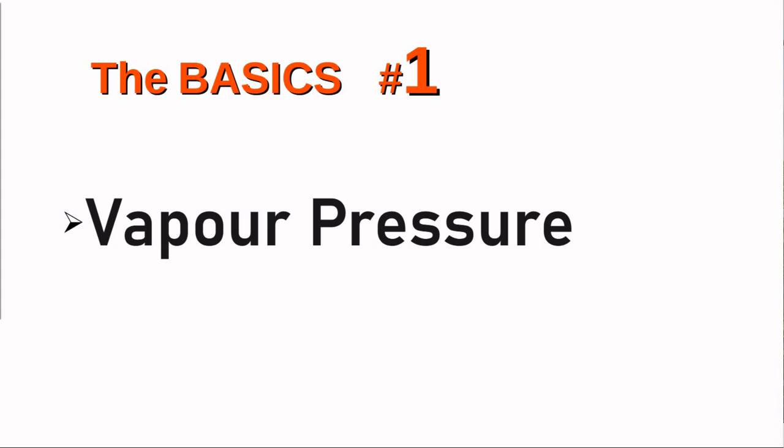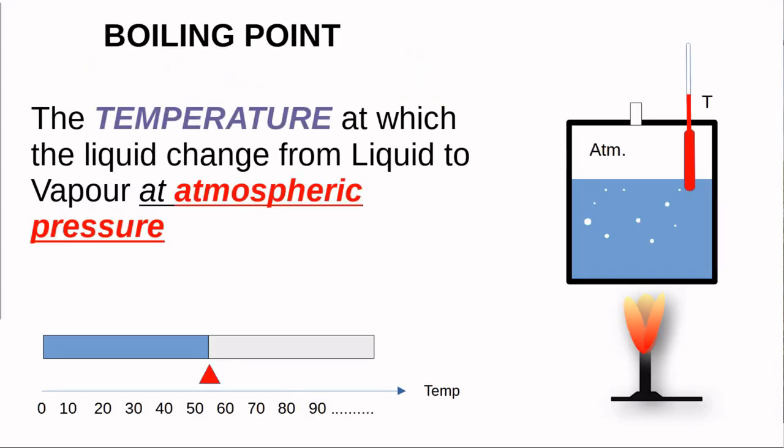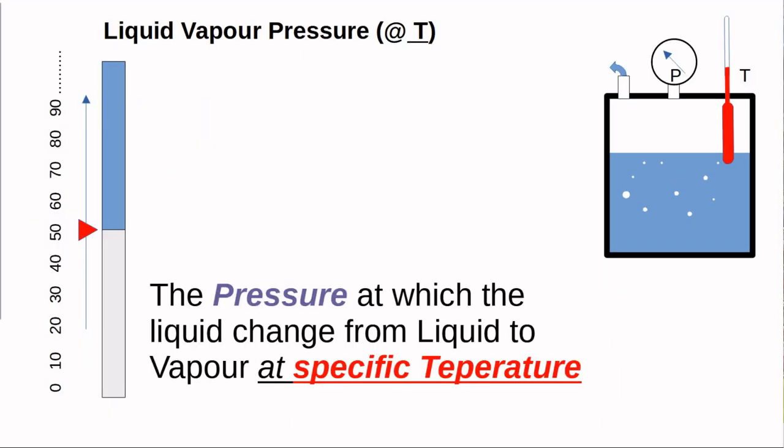Vapor pressure — what is it? We all know that if you increase the temperature of a liquid, it will change from liquid to vapor at atmospheric pressure, which we call the boiling point. Now let's reverse it: what is the pressure at which a liquid changes to vapor at a specific, constant temperature? If we reduce the pressure while keeping temperature constant, we see the liquid start to change from liquid phase to vapor state. That pressure is called the vapor pressure.